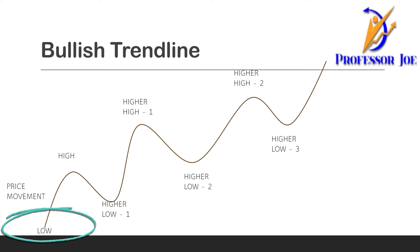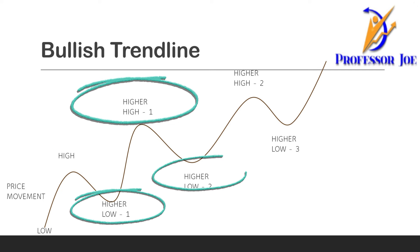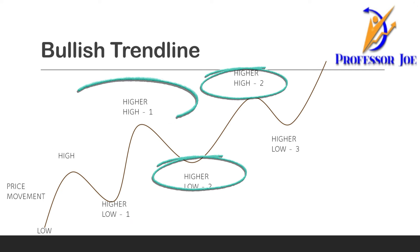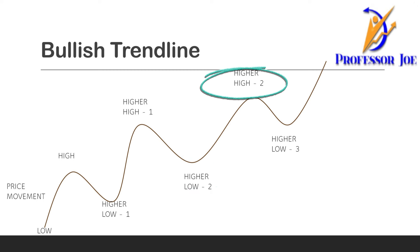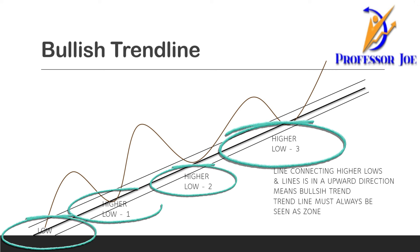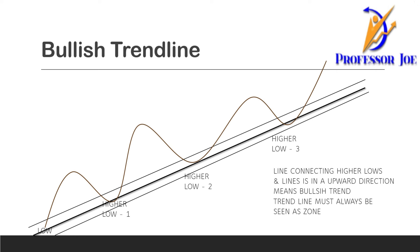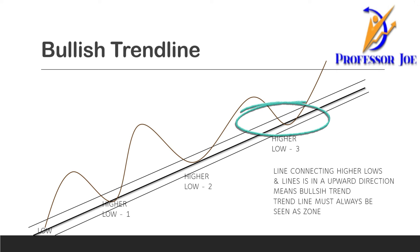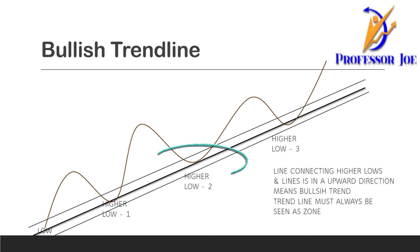In a bullish trend, the price first makes a low, then a high, then a higher low, then a higher high, then an even higher low and an even higher high. The trend line is drawn by connecting the higher lows. This is also a zone — in some cases the price touches the line, in some cases it goes below, and in some cases it barely touches the line. It should always be a zone.